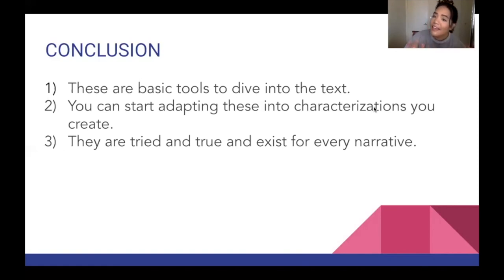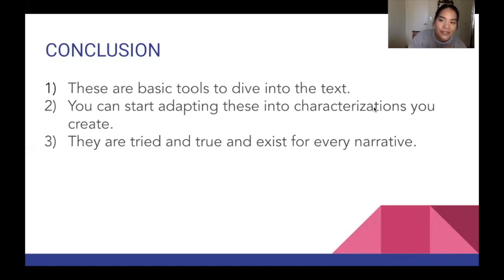You can start adapting the characterizations you create almost instantly — this is really just to give you a good gauge and then start making those creative artistic choices from there. These tools are tried and true and exist for every narrative, so you can take this model of objective, obstacle, and tactic and apply it to any narrative. They will work for every story and hopefully give you more of a gauge on narratives that feel complex or difficult.